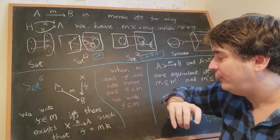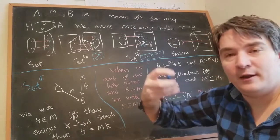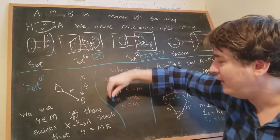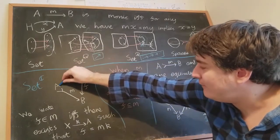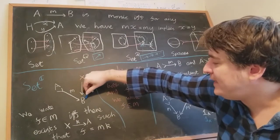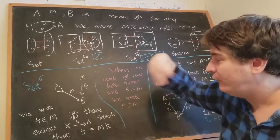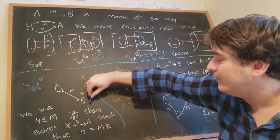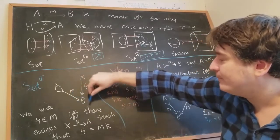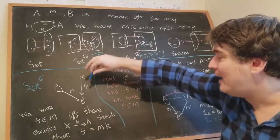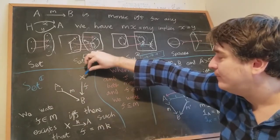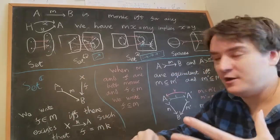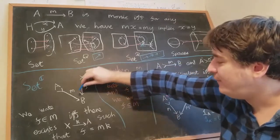What do we consider to be an arrow in a sub-object? Let's say we have this sub-object m of b — a monic from a to b — and an arrow f from x to b. The important definition: we say f is in m if and only if there exists an arrow k such that m after k equals f.